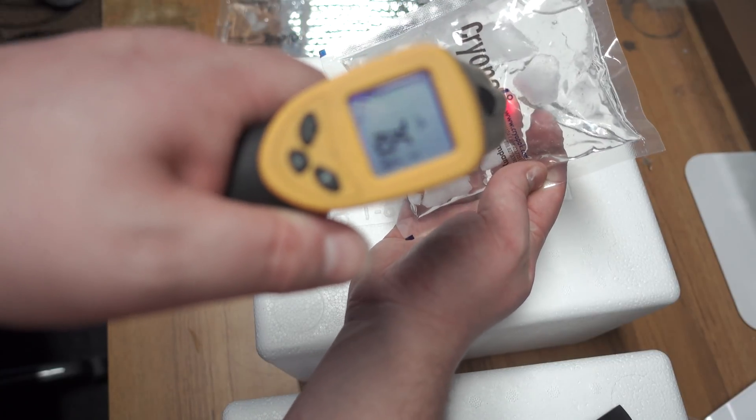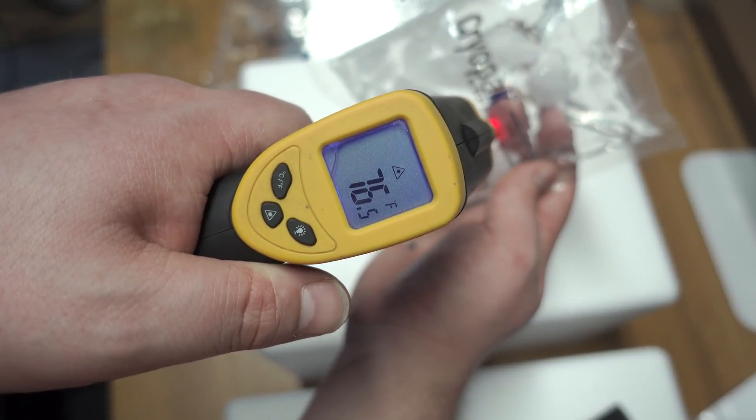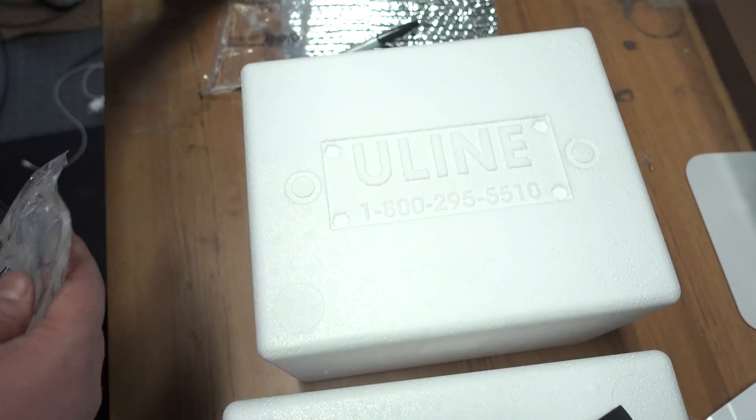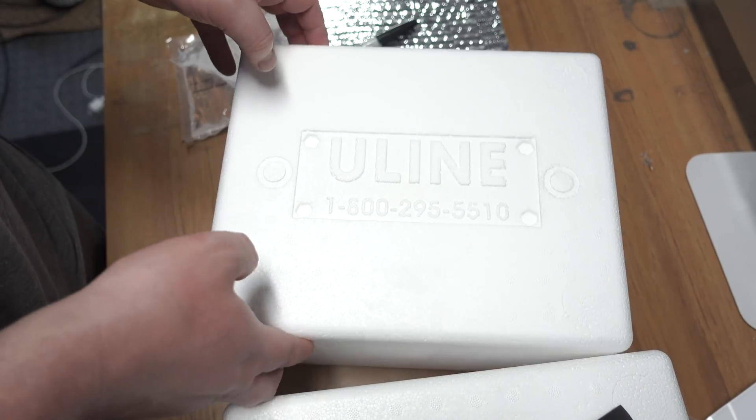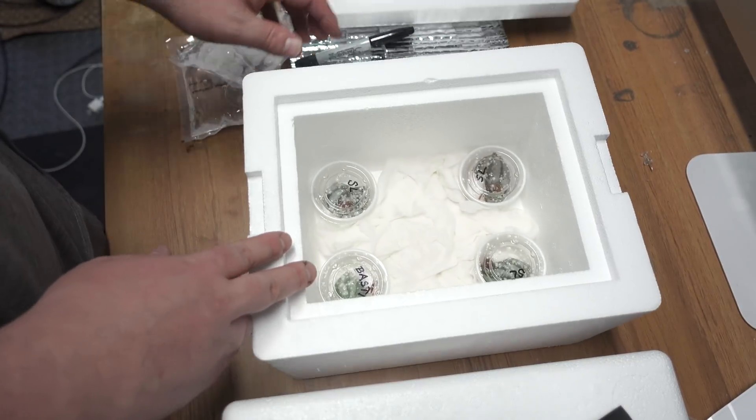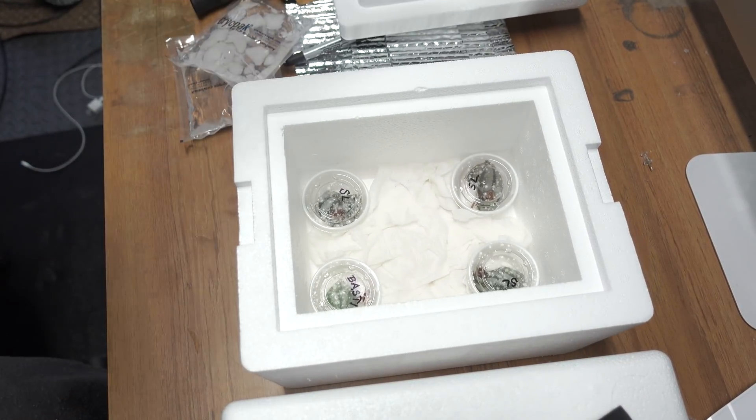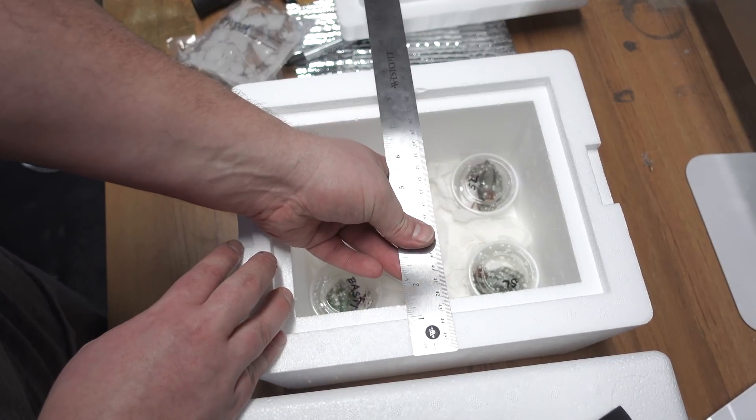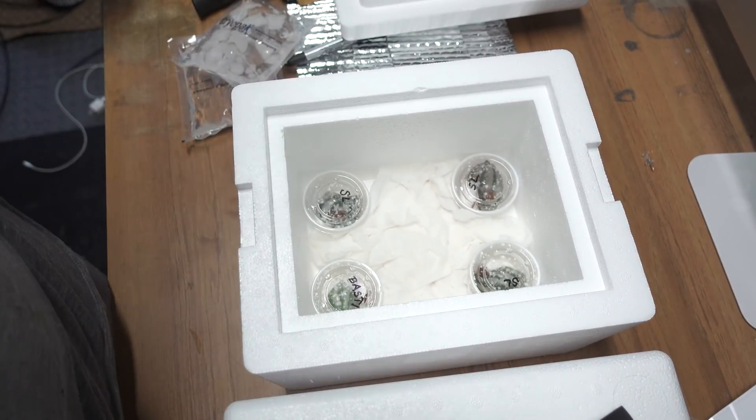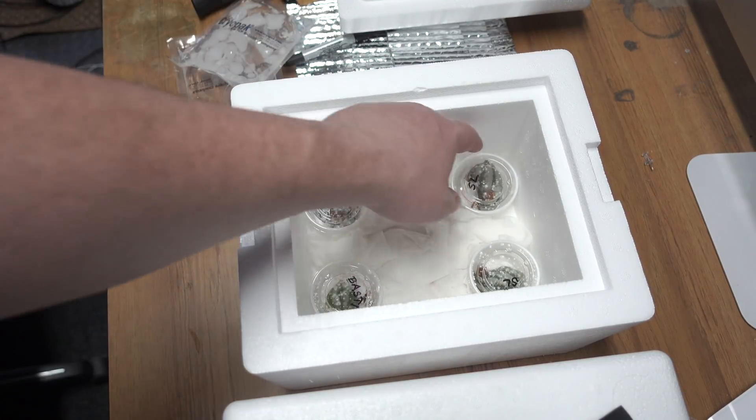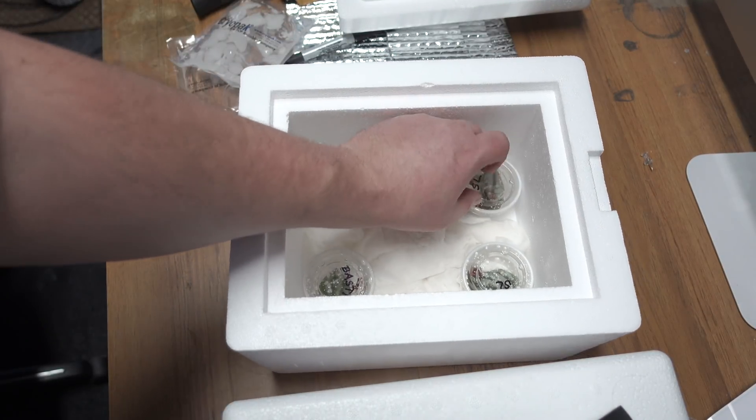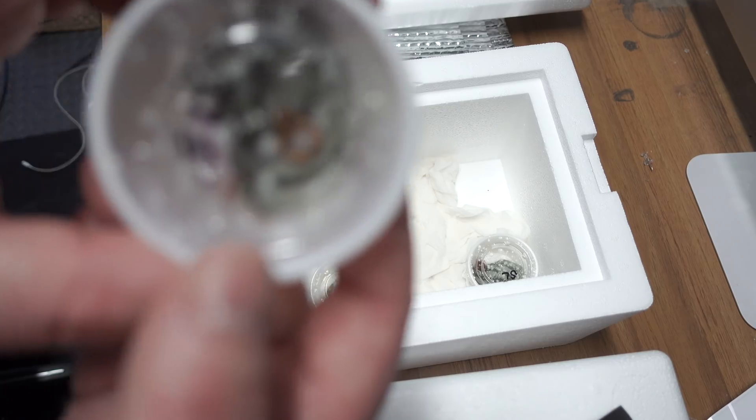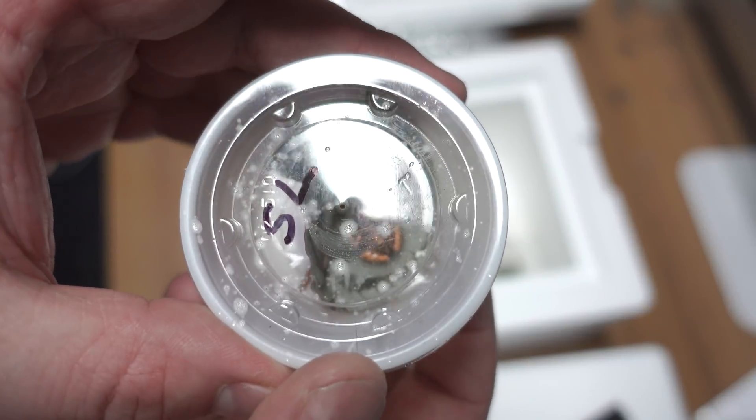And I get a reading of 76.5. So anywhere from 70 to 80 degrees is good. Obviously the warmer it is when you're shipping in cold weather. But you don't want to actually cook your frog. So you don't want it to be hot. You don't want to get a reading of like 85, 90 degrees. That's a little warm. Even though you are using the thermal bubble wrap, you still want to get a reading of anywhere from 70 to 80 degrees.